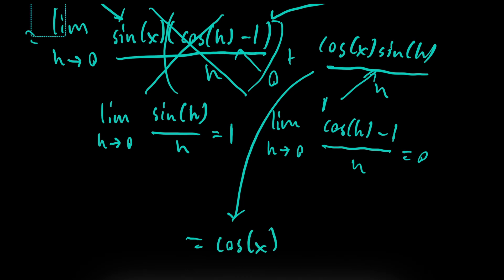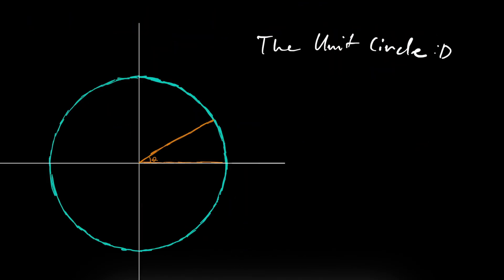So algebraically, this works. But why does this make sense geometrically? For that, we need the unit circle. Let's say we have a function a of theta is equal to sine of theta. So you're going theta radians around this circle right here, theta radians, and that would correspond to a height of sine of theta. The height of this point on the terminal arm here, or the y value of the coordinate.